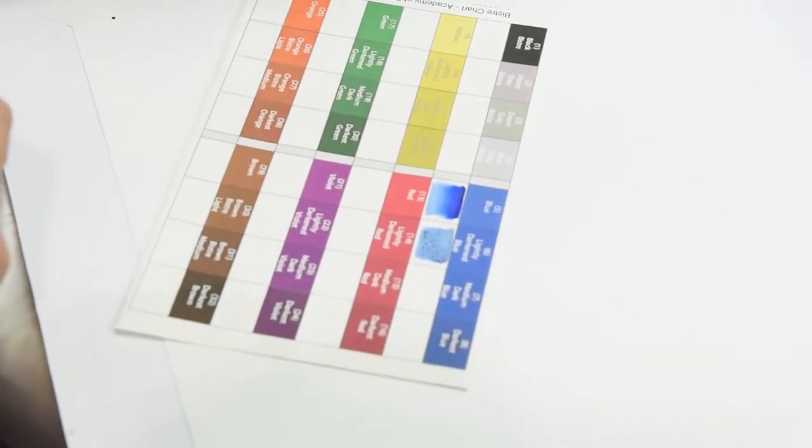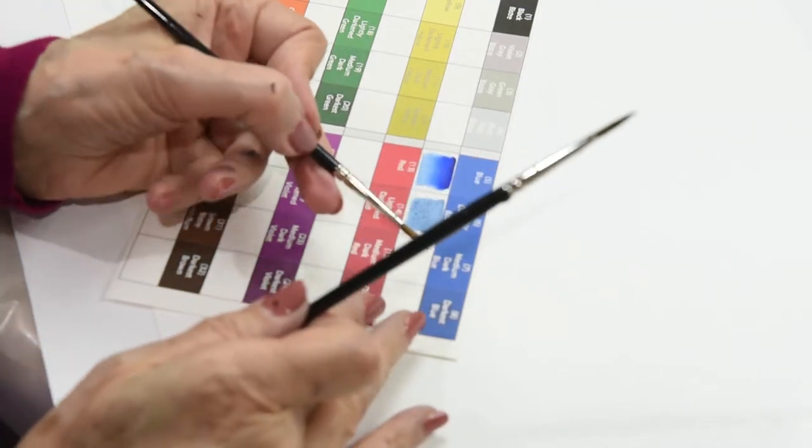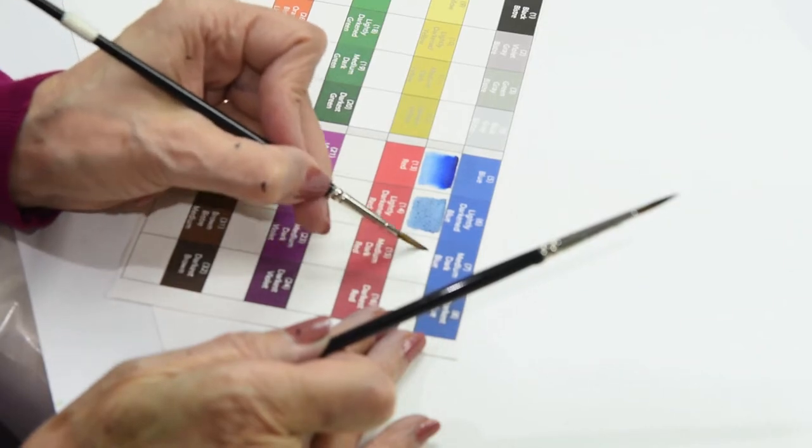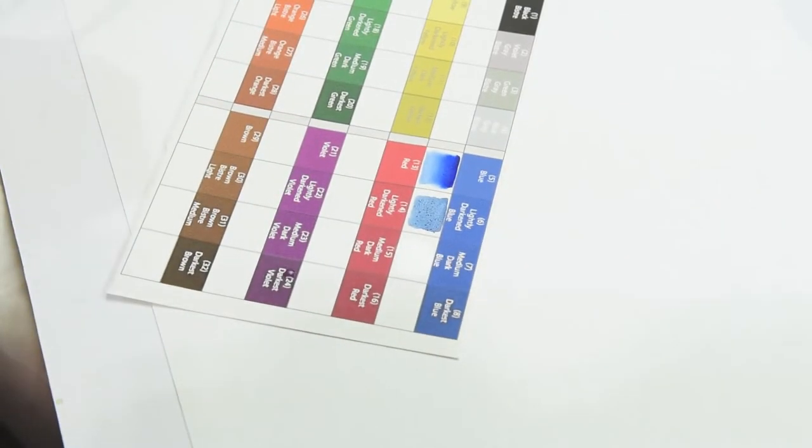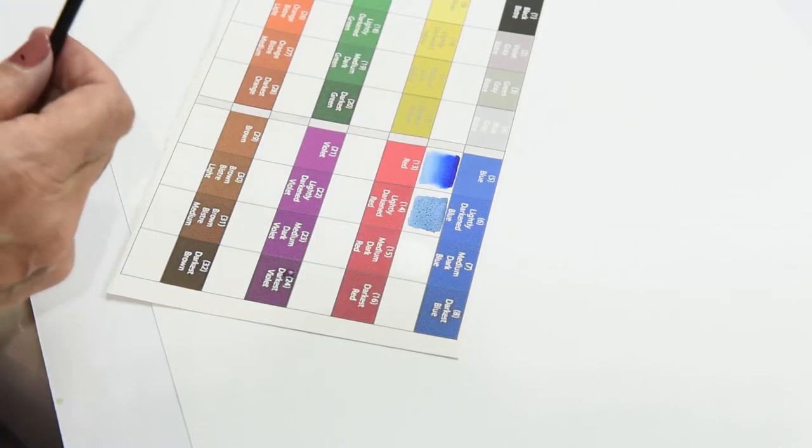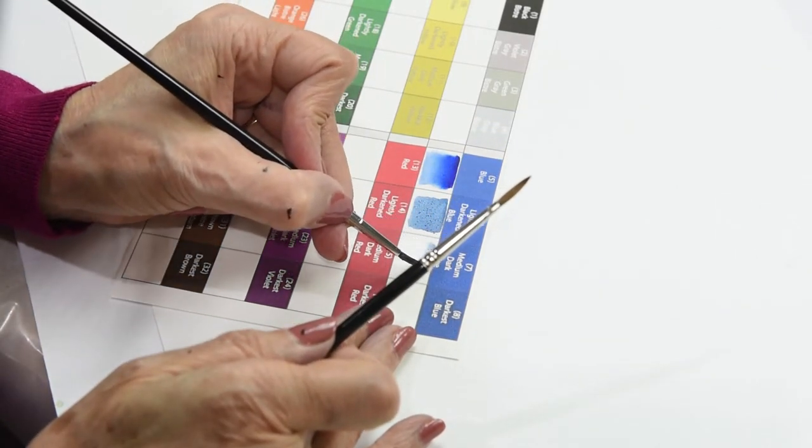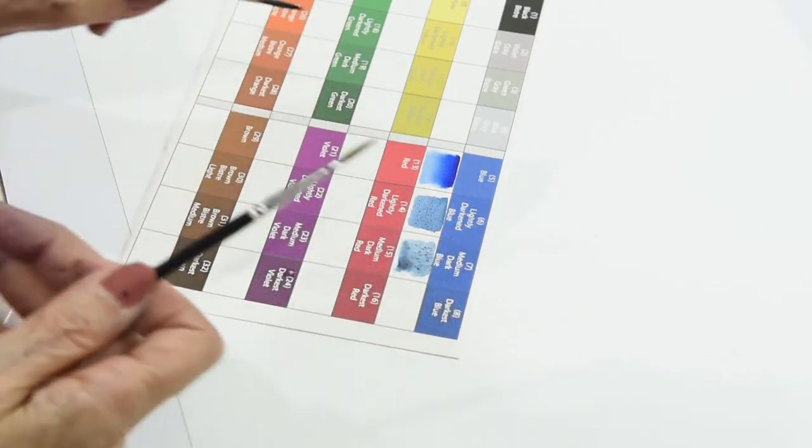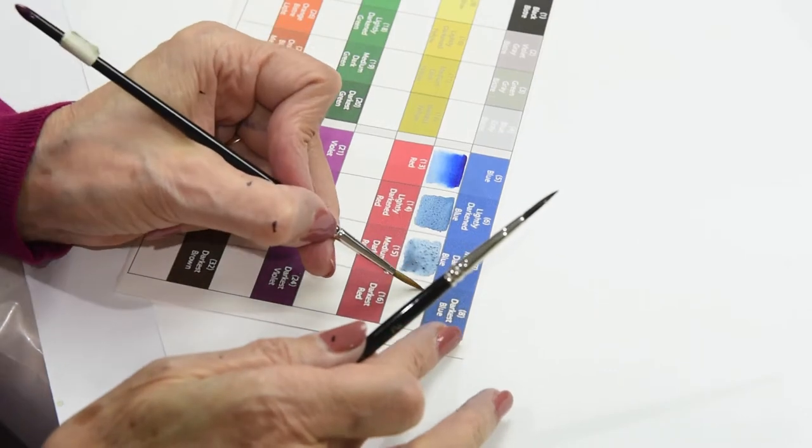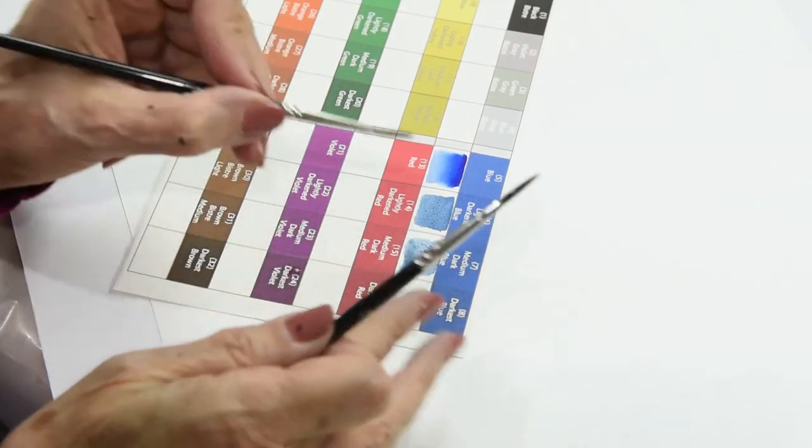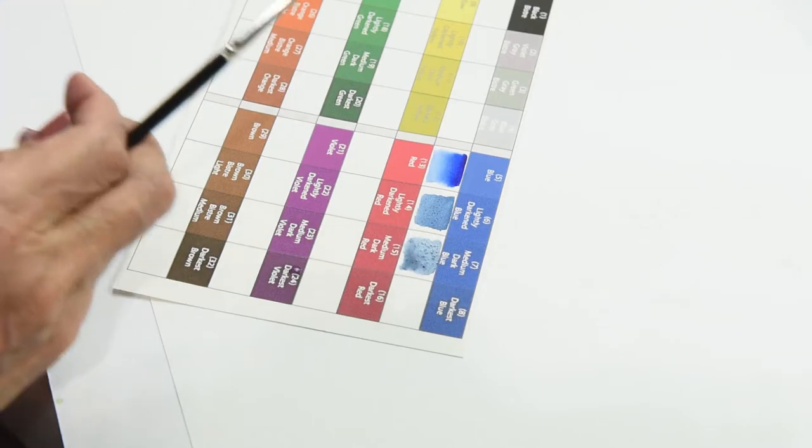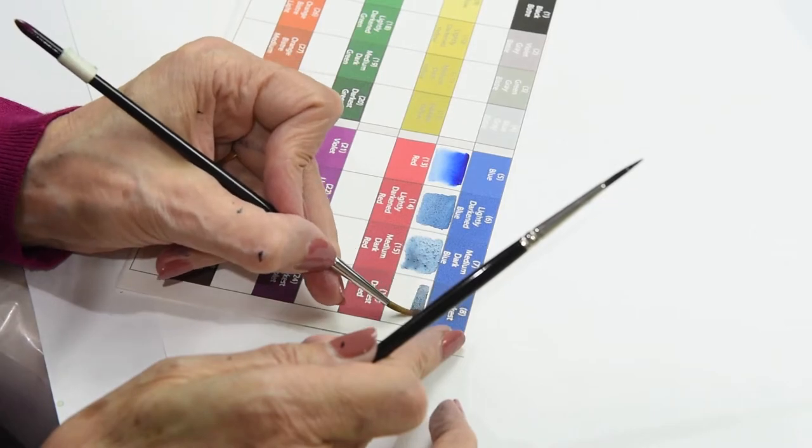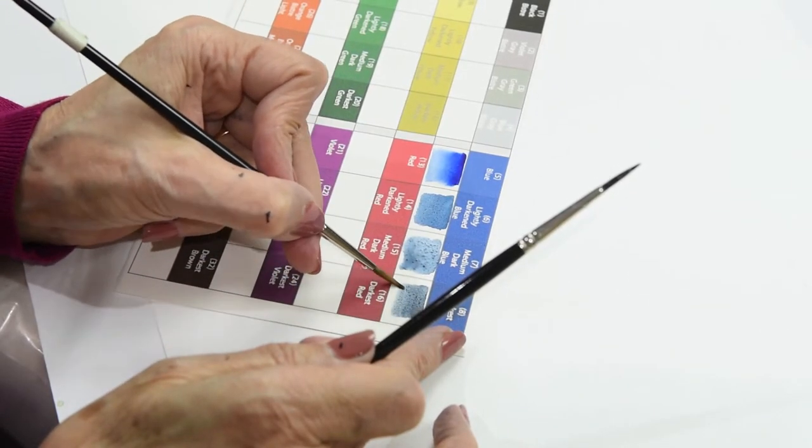On the third one, I'm going to add a little bit more bistra. I'm going to change the value even more. And on the fourth one, I'm going to add even more bistra and change the value so that it's even darker.